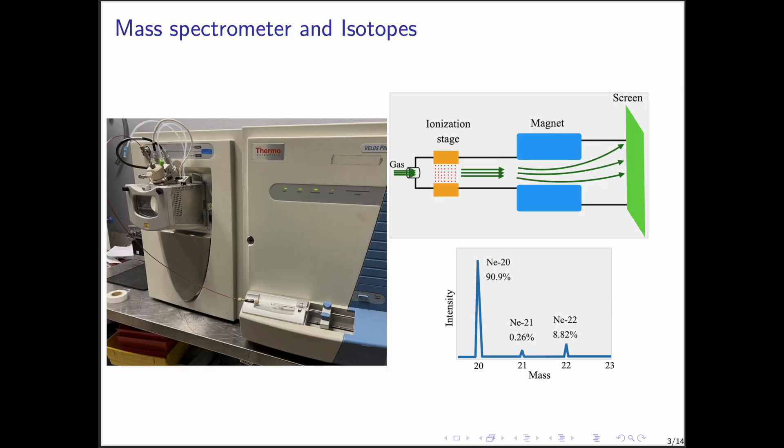One of the most accurate techniques for determining atomic masses is mass spectrometry. This technique measures the charge-to-mass ratio of charged particles. Inside a mass spectrometer, ions are deflected into a circular path by a magnet, and the radius of that path depends on the mass-to-charge ratio.